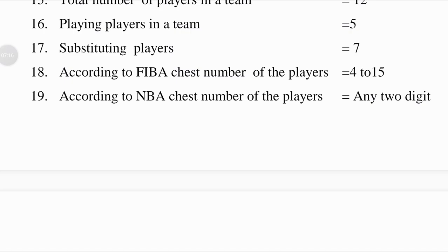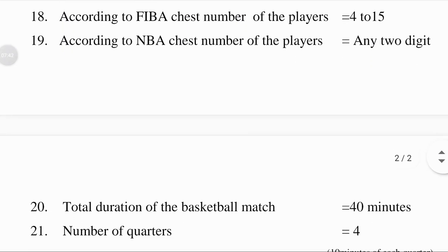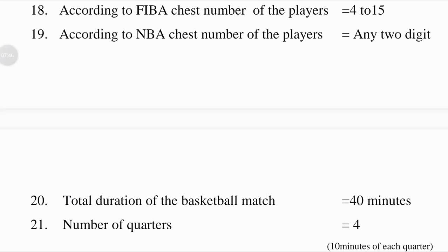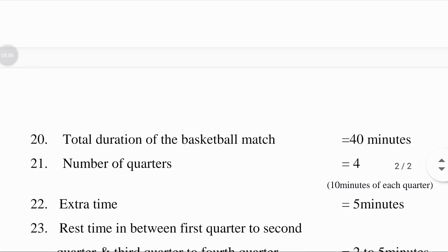According to FIBA — the international basketball federation which governs the sport of basketball worldwide — chest numbers of players range from 4 to 15. According to the NBA — the National Basketball Association of America, the professional basketball league — the players' chest number can be any two digits, meaning whichever number is chosen.